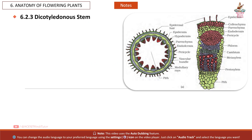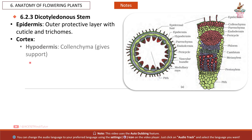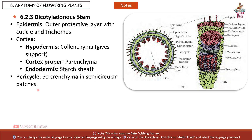The Dicotyledonous Stem has: an epidermis as the outer protective layer with cuticle and trichomes; a cortex with hypodermis made of colenchyma for support; cortex proper made of parenchyma; endodermis known as the starch sheath; and a pericycle made of sclerenchyma in semi-circular patches.